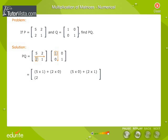In the matrix PQ, you have now got 5 into 1 plus 2 into 0. This will be the first row, first column element of matrix PQ. Continue the process to get the remaining elements of matrix PQ.